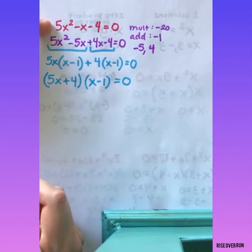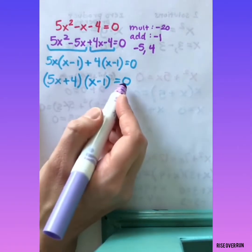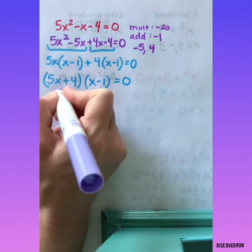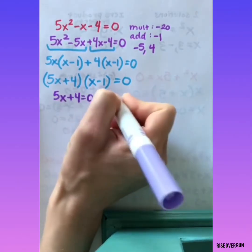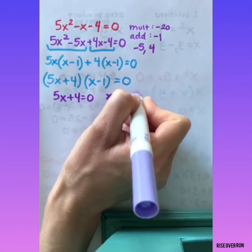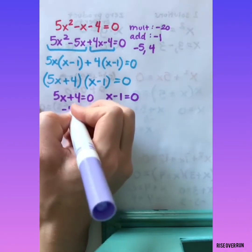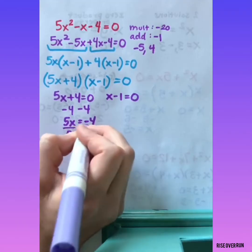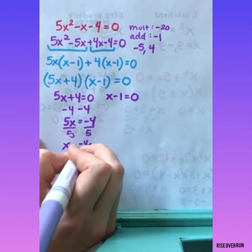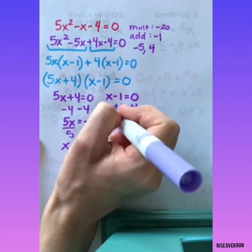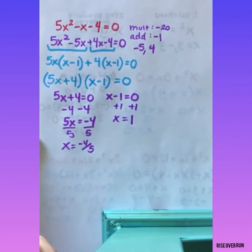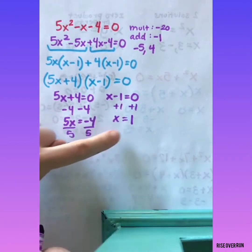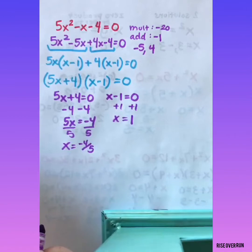This is the factored form of this equation. Since it's equal to 0, I know that either 5x plus 4 equals 0 or x minus 1 equals 0. I'm going to solve both of these. So my two solutions are negative 4 fifths and positive 1. If I plug either one back in here, it'll give me a value of 0.